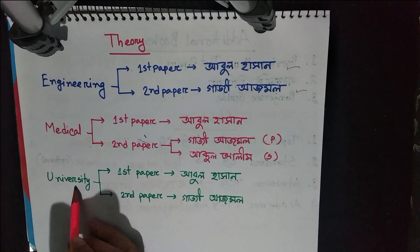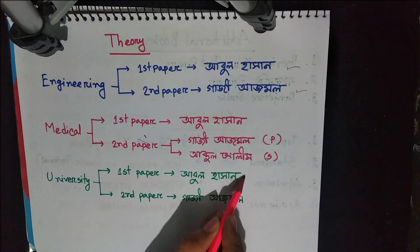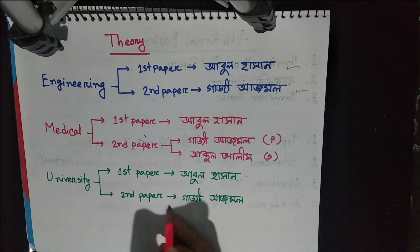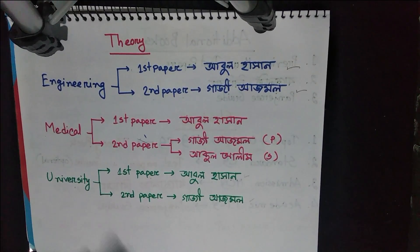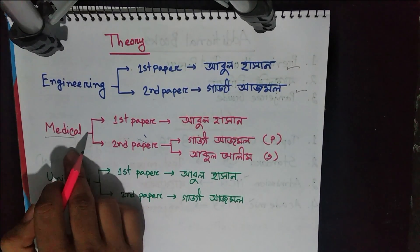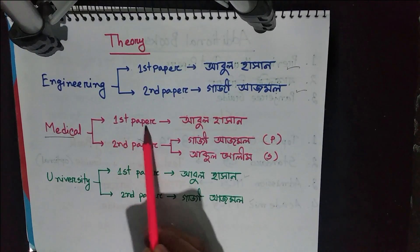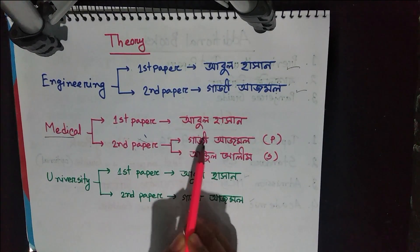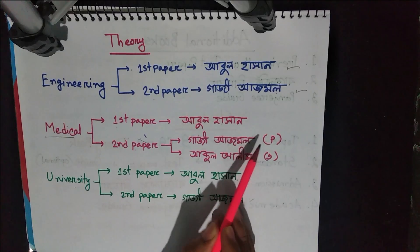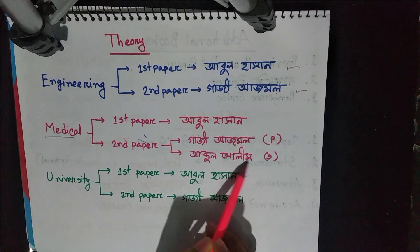University khe tjo — jayadere university te aam pori bhoi, taraa fast paper jona Abulhasan pori bhoi, aar second paper jona Gaji Aazman pori bhoi. Eta hi tada jona enough. Aar jayadere chha medical, jara medical preparation niti te chau, tada jona fast paper jona Abulhasan tai enough ha bhoi, aar second paper jona Gaji Aazman primary bhoi pori bhoi, aar secondary jona Abdulalim pori bhoi.